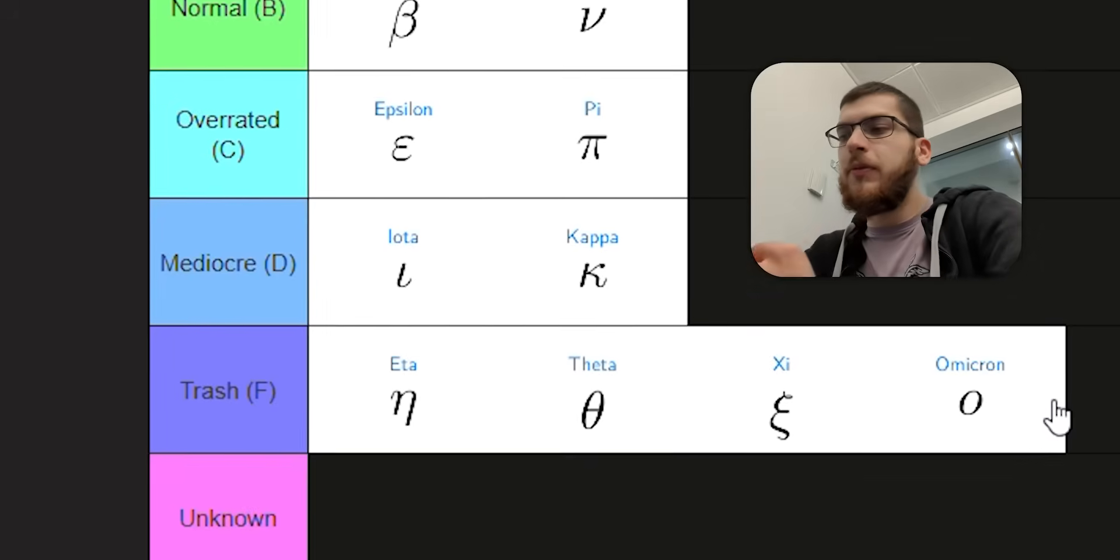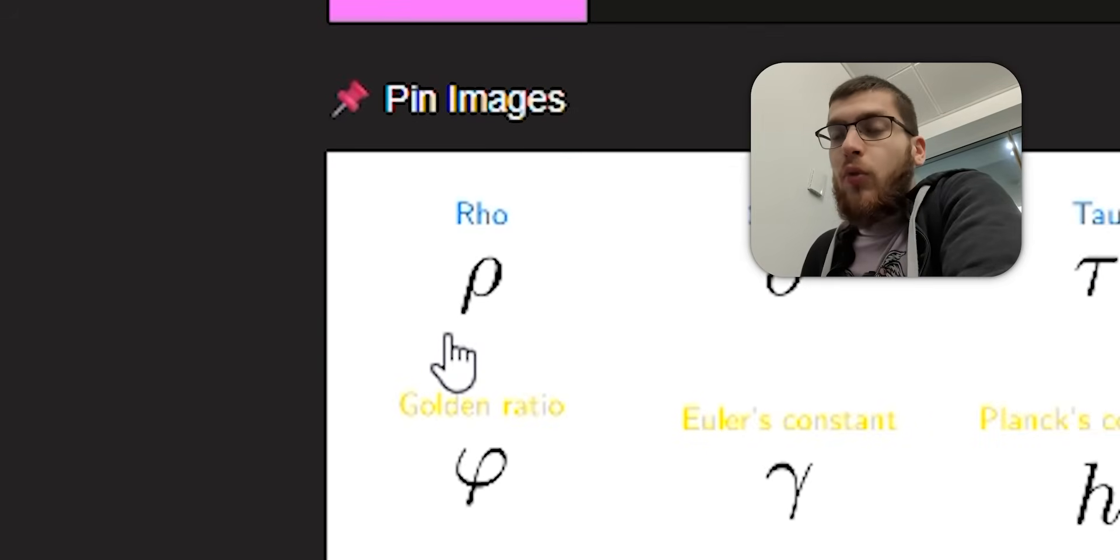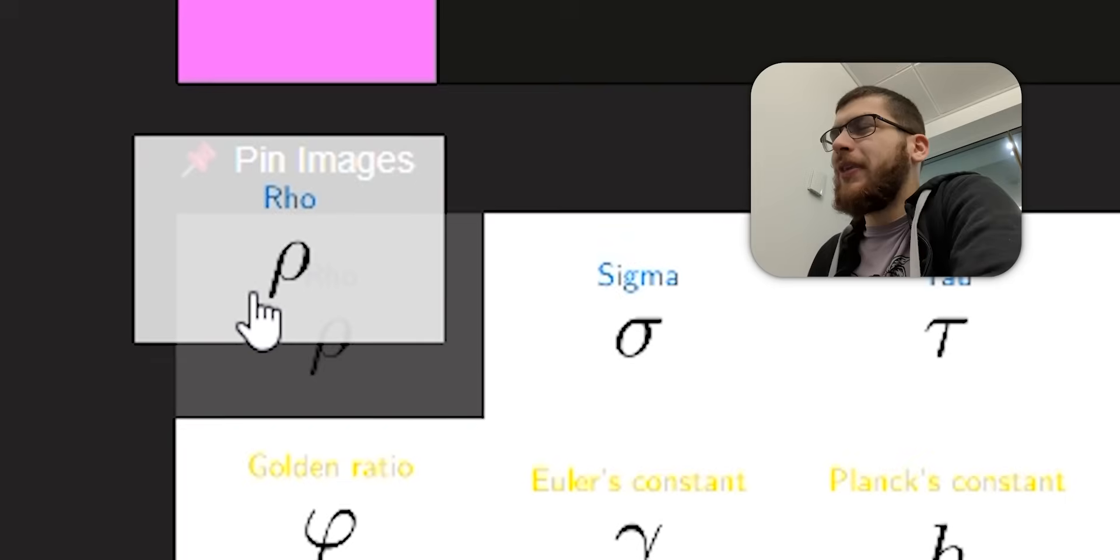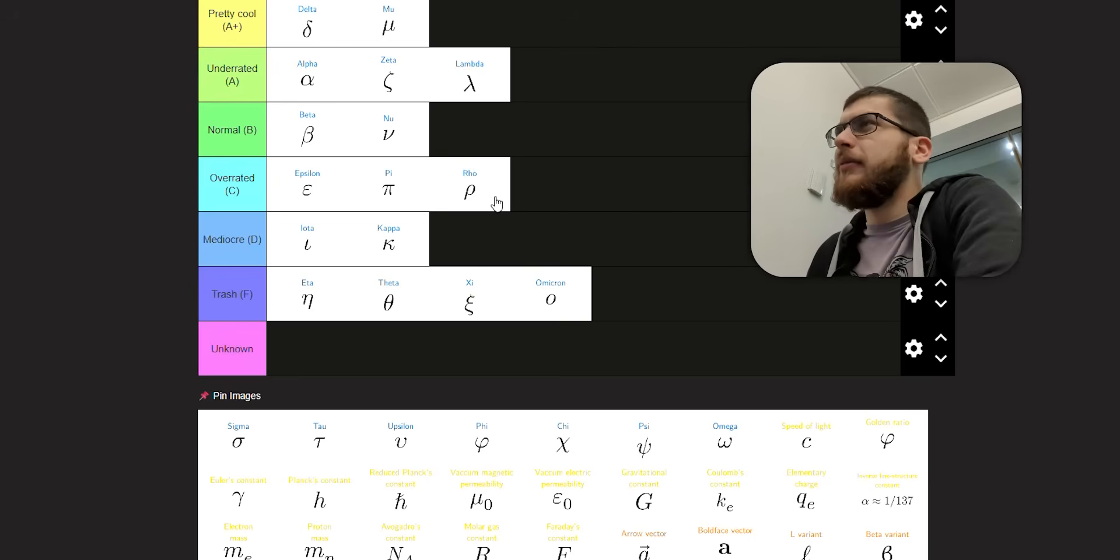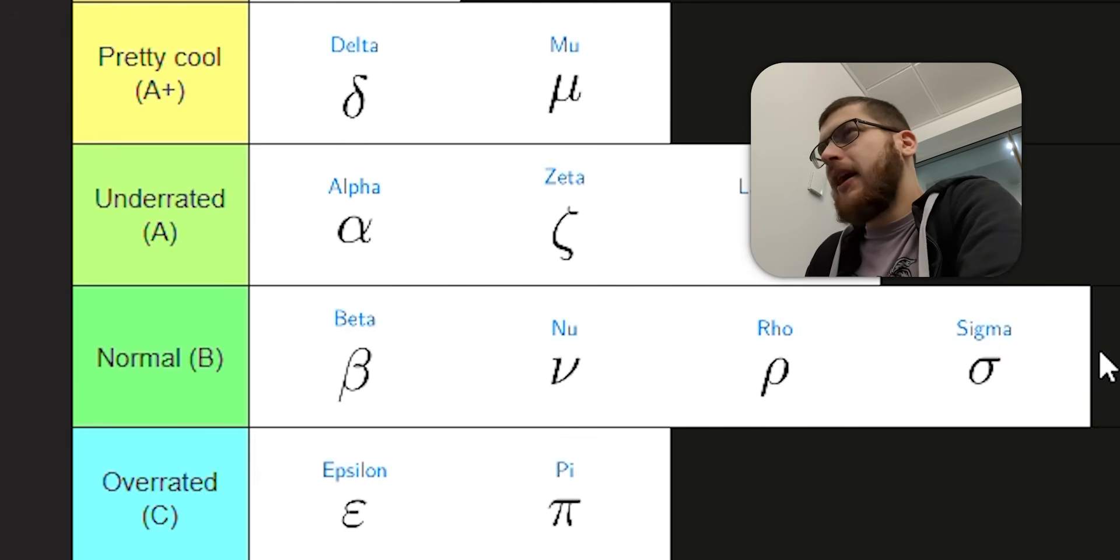Omicron, terrible letter. Never use Omicron. It's going to be a mistake for an O, which can be a mistake for a zero. And who uses Omicron. Next, we've got rho, which is used for resistivity. It's an easy thing to write. It's kind of okay on the eyes. I'm going to put it in B tier. It's normal.